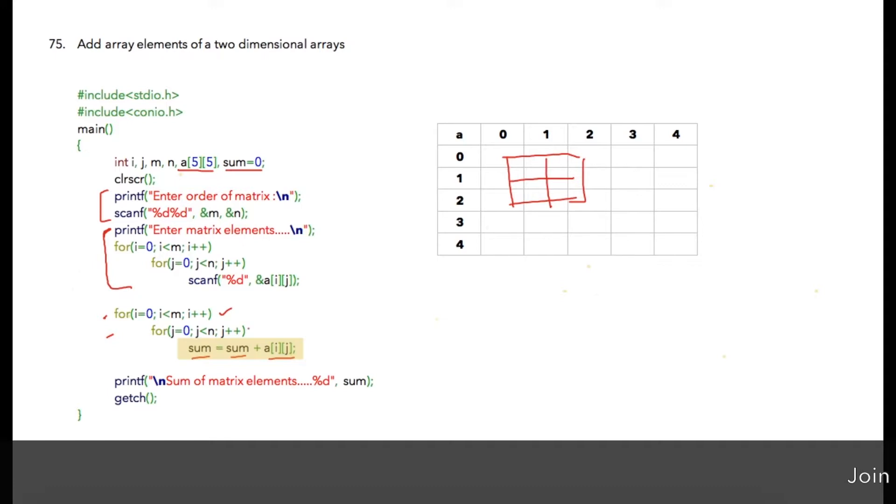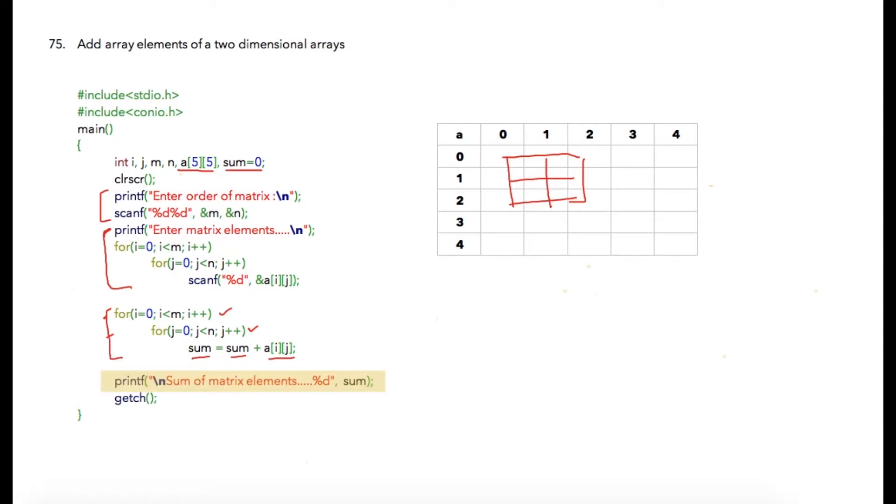Once the addition is performed by this for loop we will simply print sum of matrix elements is percent d and current value of sum will be printed over here.